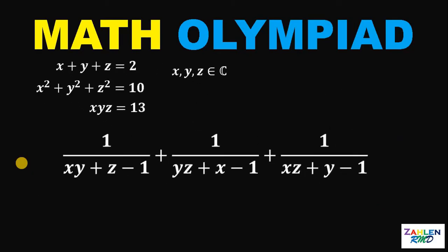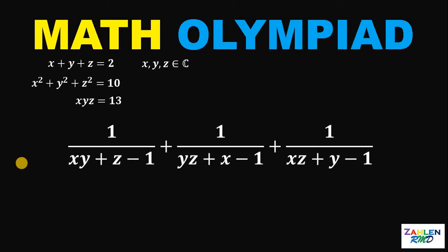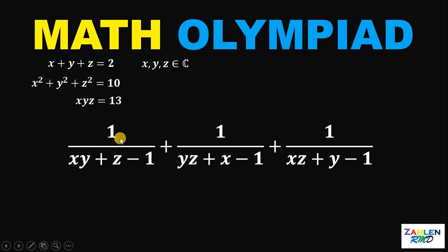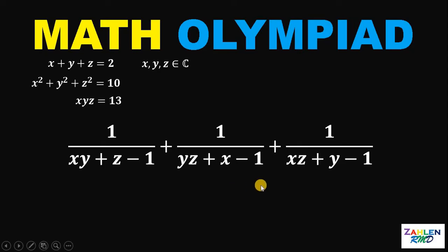Now, let's answer this question together. Given that x, y, and z are all complex numbers and these three equations, our goal is to evaluate 1 over xy plus z minus 1, plus 1 over yz plus x minus 1, plus 1 over xz plus y minus 1. How are we going to answer this question?